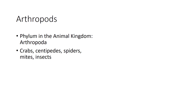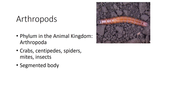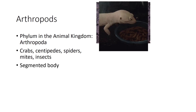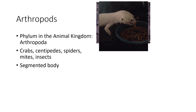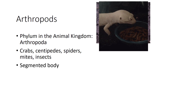All arthropods share the following characteristics. First, arthropods have a segmented body. The top photo shows a click beetle larva, which can cause problems in turf grass — notice its segmented body. Fun fact: these are also called mealworms when you buy them at pet stores for reptiles.